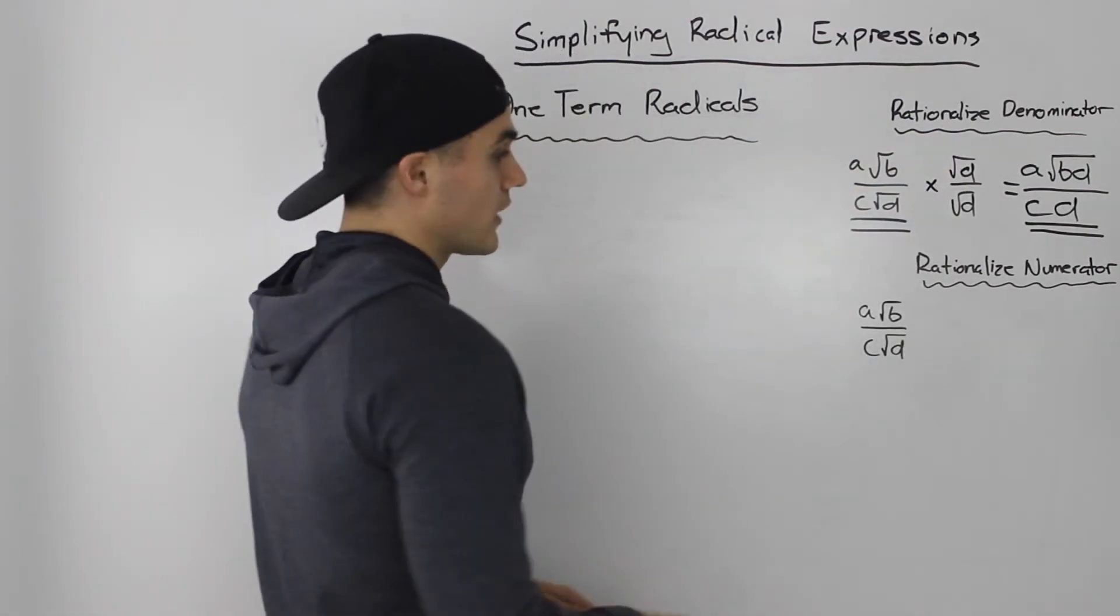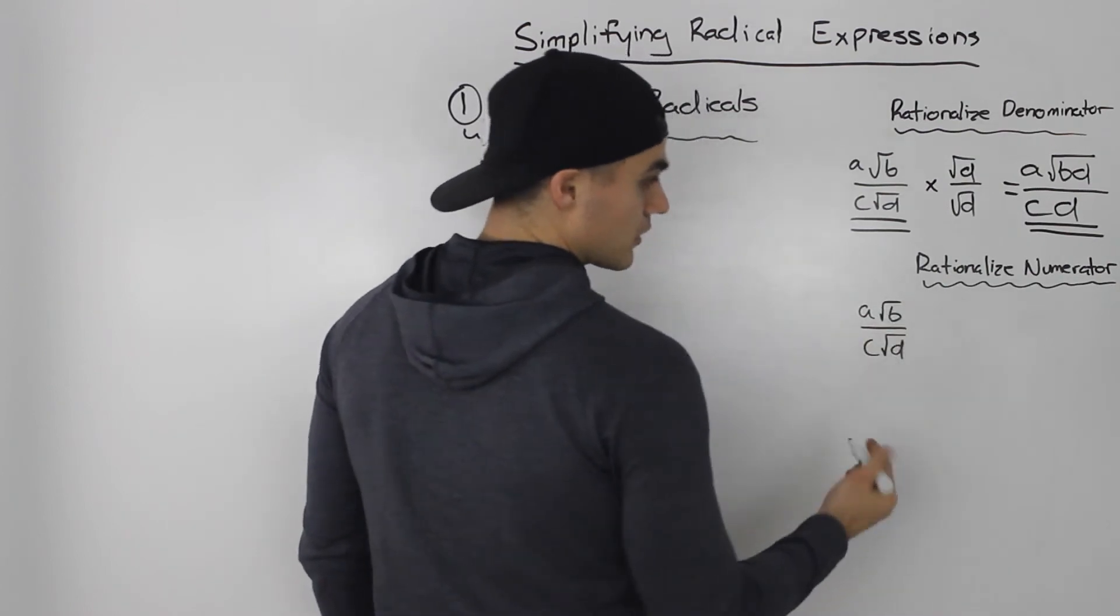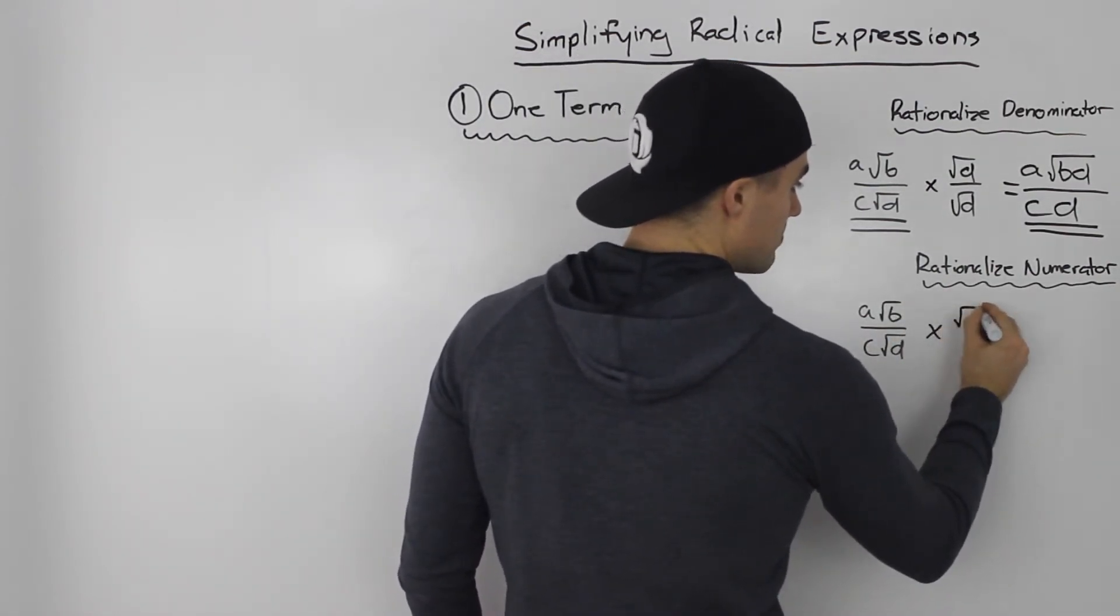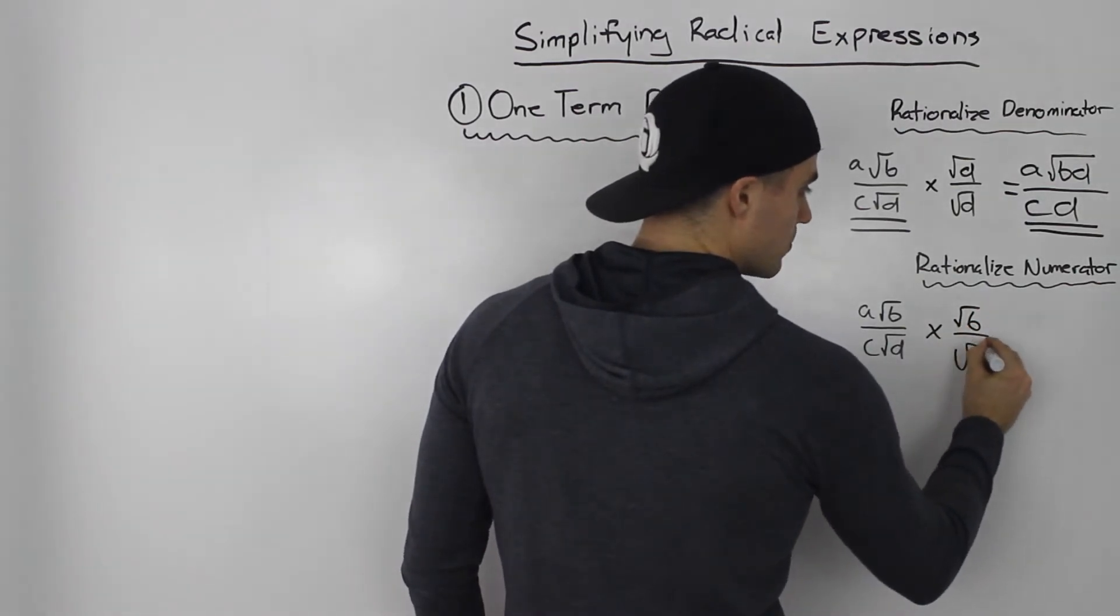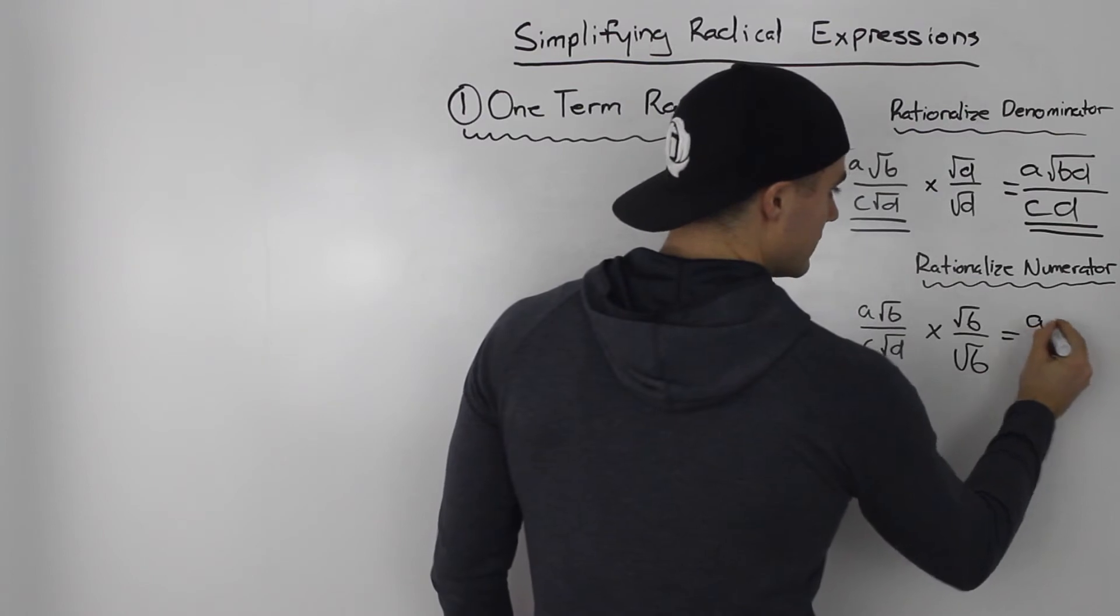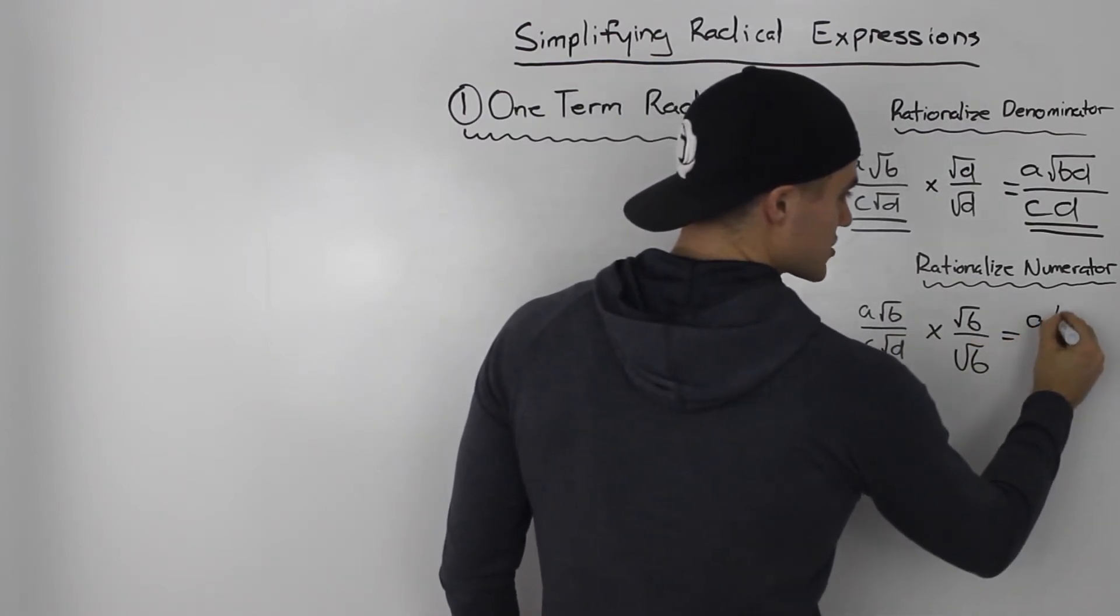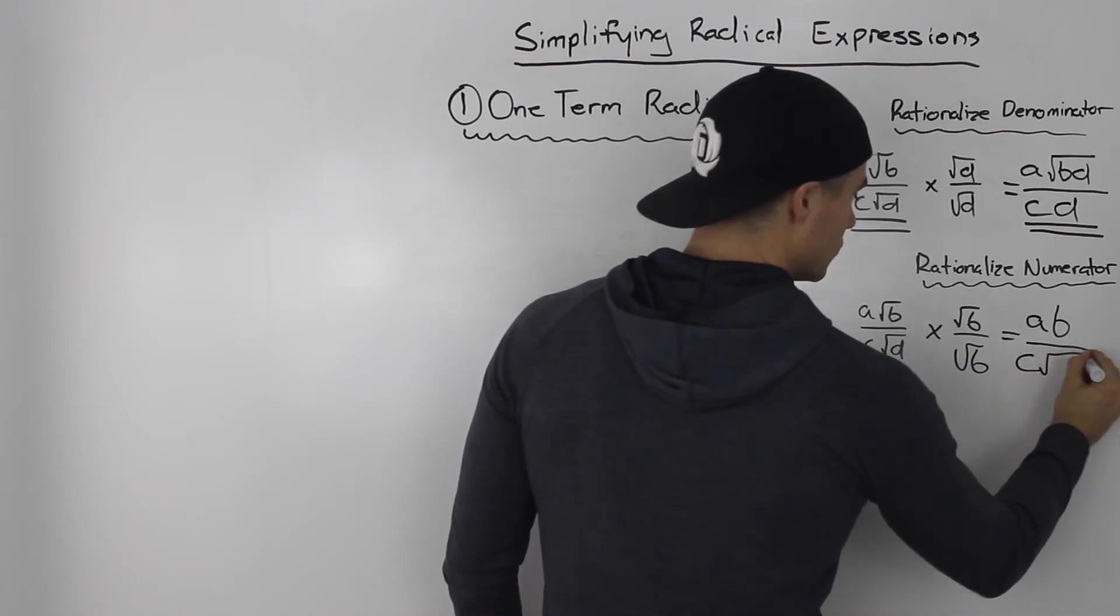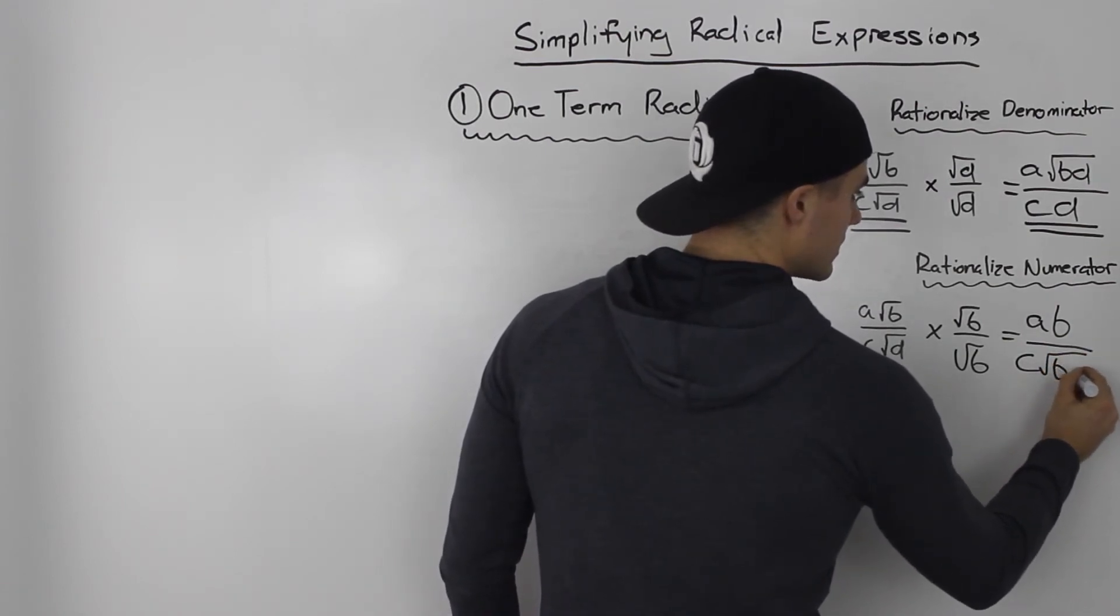Next case, if we're rationalizing a numerator, what do we got to get rid of? We got to get rid of this root B. We would just multiply this expression by root B over root B. We would end up having A root B times root B is just B over C root BD.